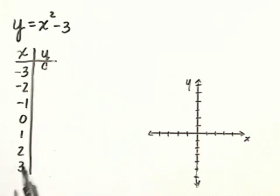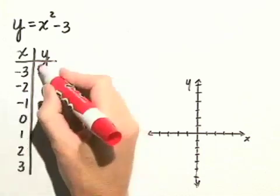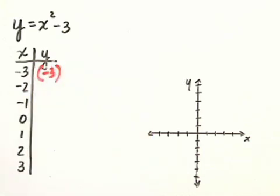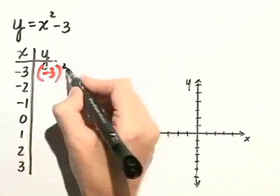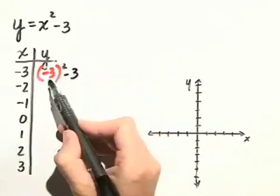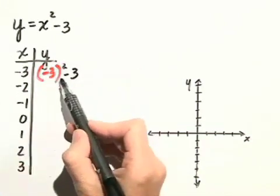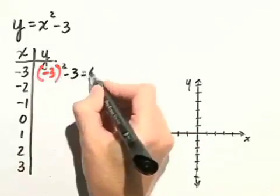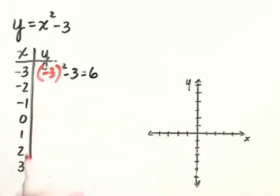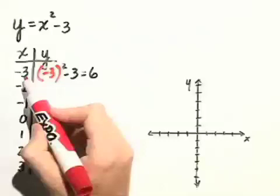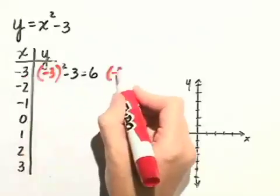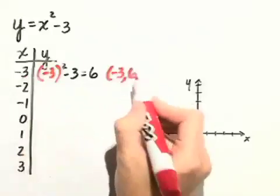So let's first start by substituting in negative 3 for x, and we have negative 3 squared minus 3. Negative 3 squared is just 9, minus 3 gives us 6. So the first point that we'll plot will be when x is negative 3 and the y value is 6.